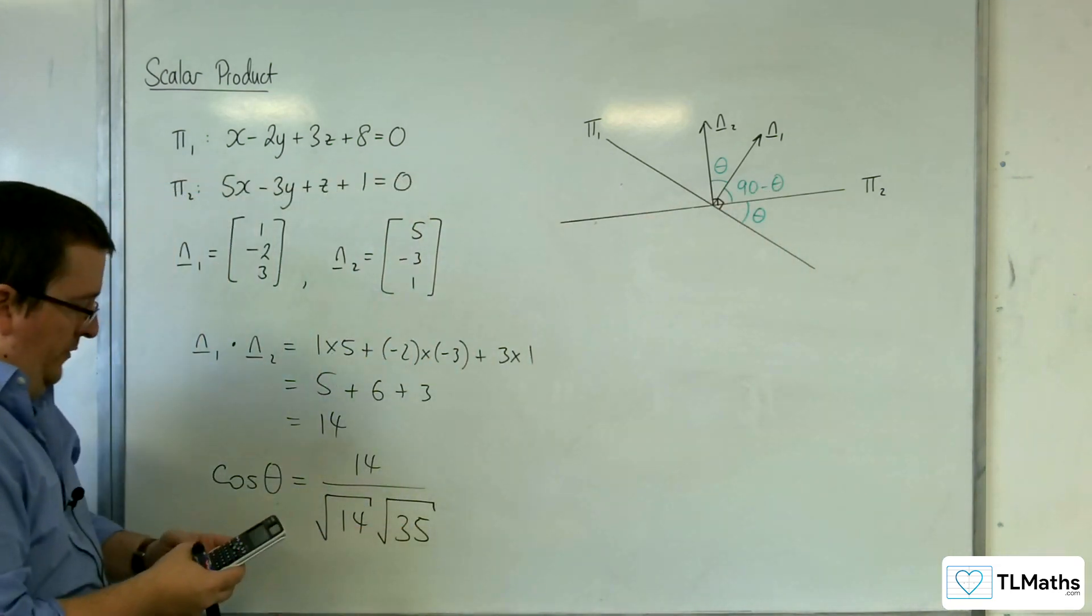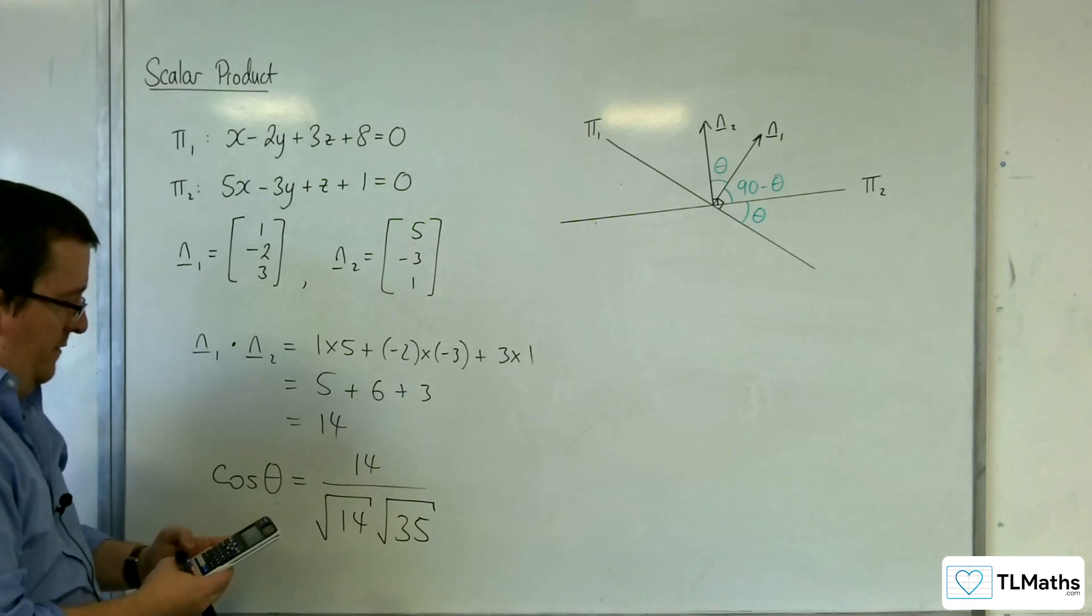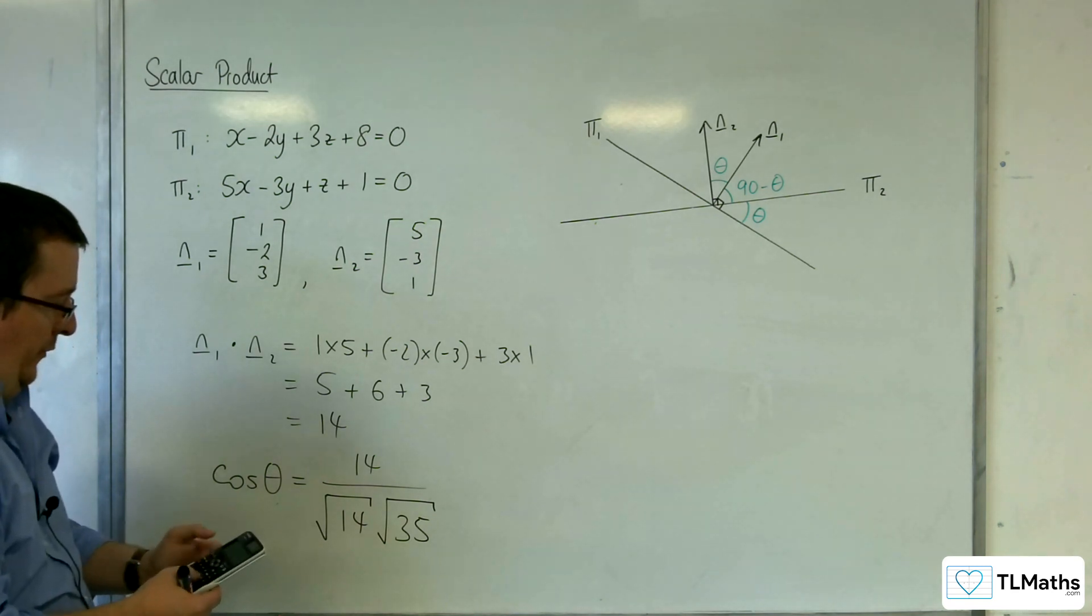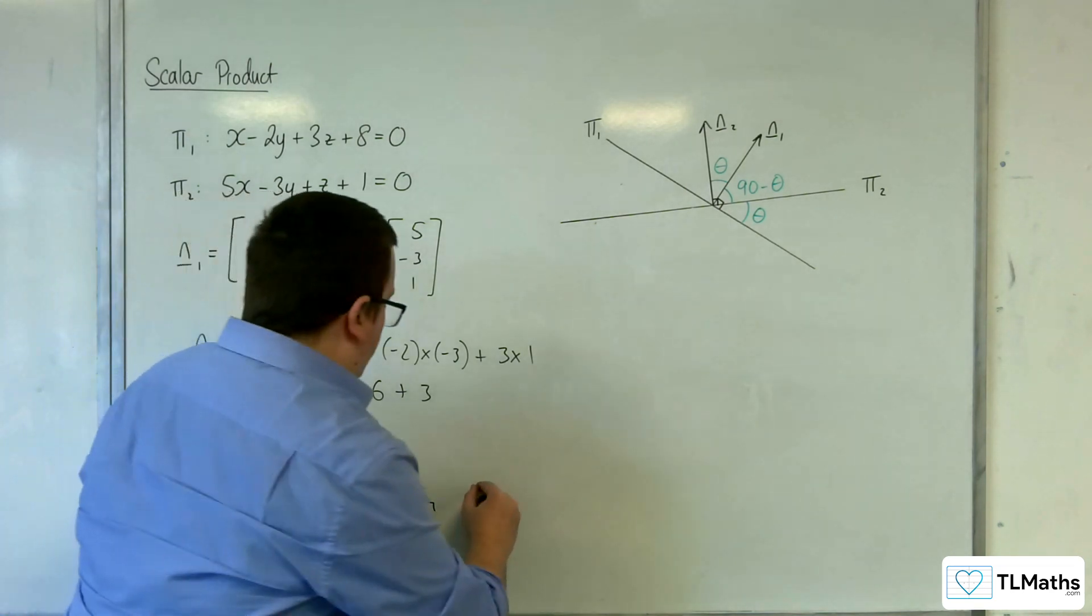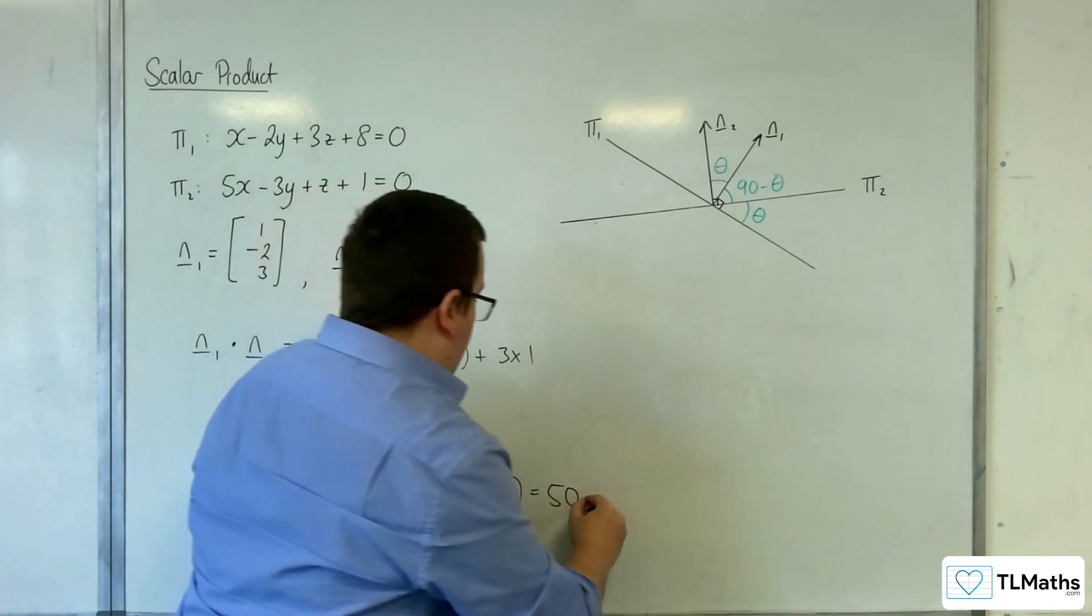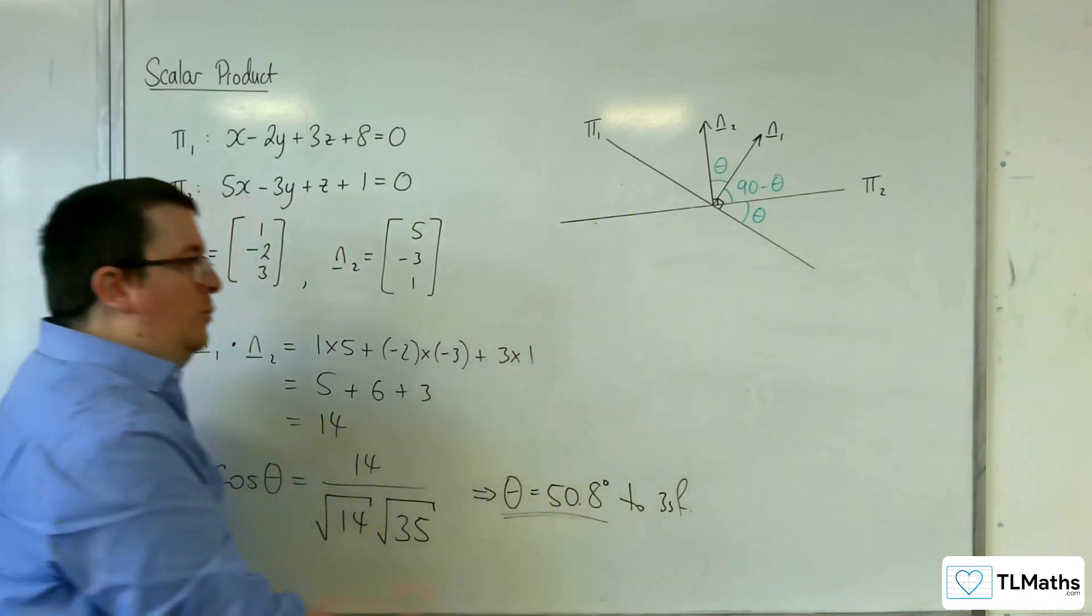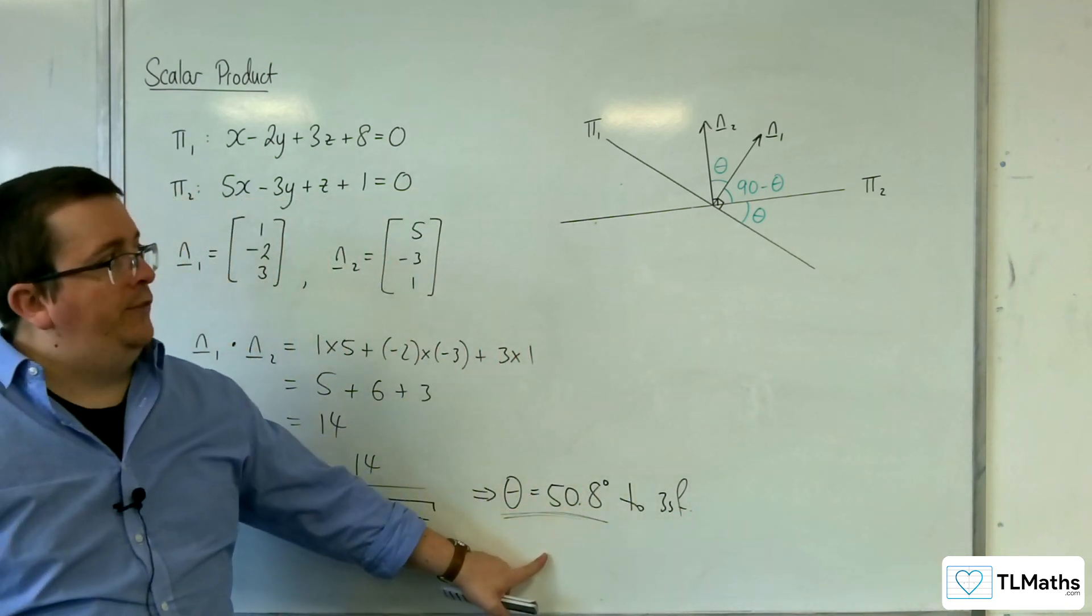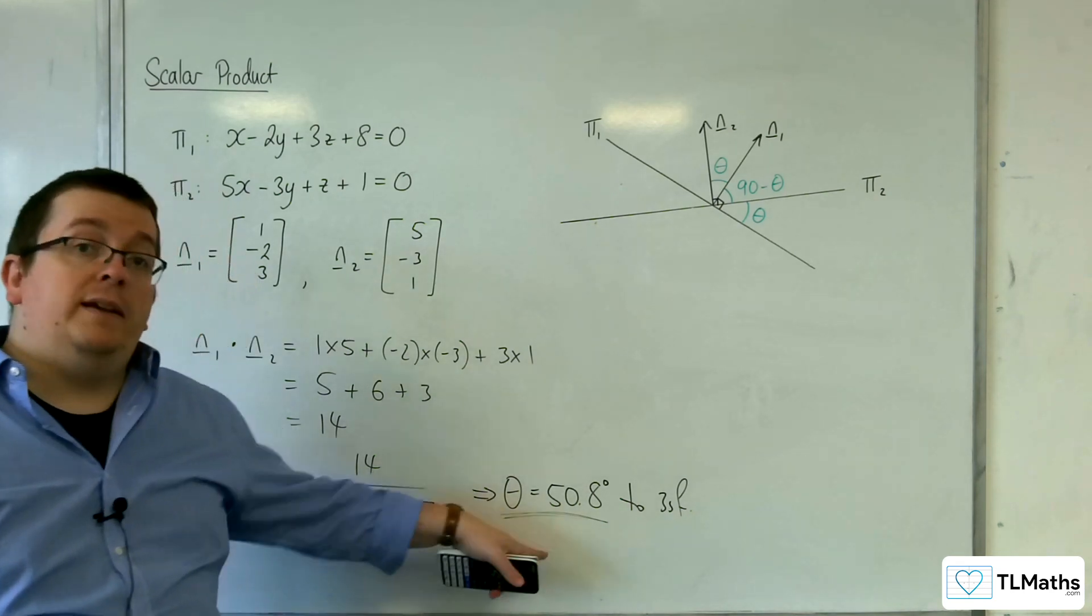So 14 over root 14 times root 35, and then the inverse cosine of that gets us 50.8 degrees. So theta is 50.8 degrees to 3 sig fig. This is the angle between the two normal vectors, which means that is also the angle between the two planes.